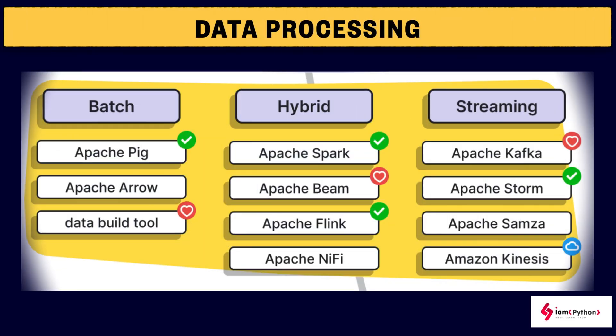Data processing is a very important step. Data can come from batch and streaming sources. Hybrid frameworks like Spark, Beam, and Flink handle both batch and streaming. For streaming data we use Apache Kafka, Storm, Samza, and Kinesis. For batch data we use Apache Pig and Apache Arrow. Data build tools can also be developed, and hybrid frameworks support both batch and streaming.